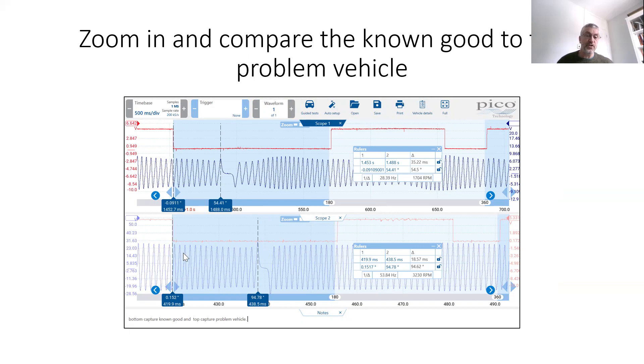I put the phase rulers on, I can then calculate the rotation difference between the two. So I've lined them up with the same positions on the cam and crank sensors, and you can see I've got rotation of 94 degrees on my good vehicle and my problem vehicle, I've got 54. So I've got about a 40 degrees difference between the two.